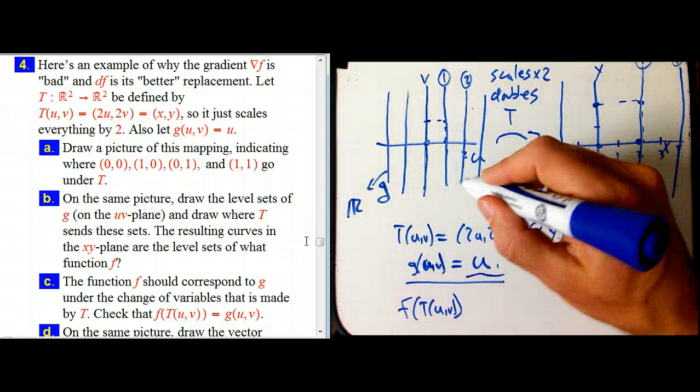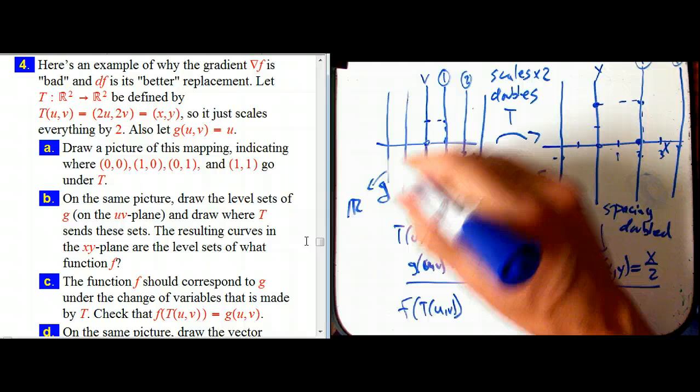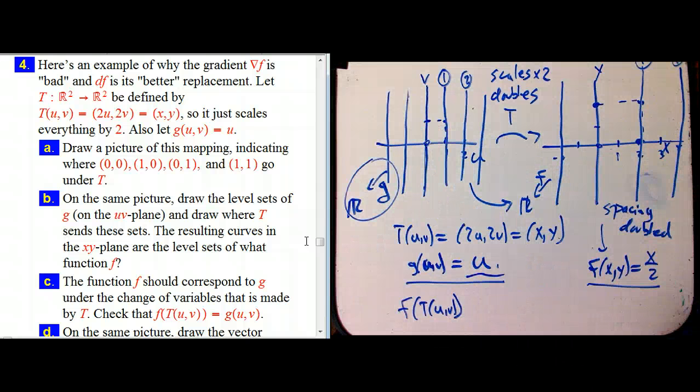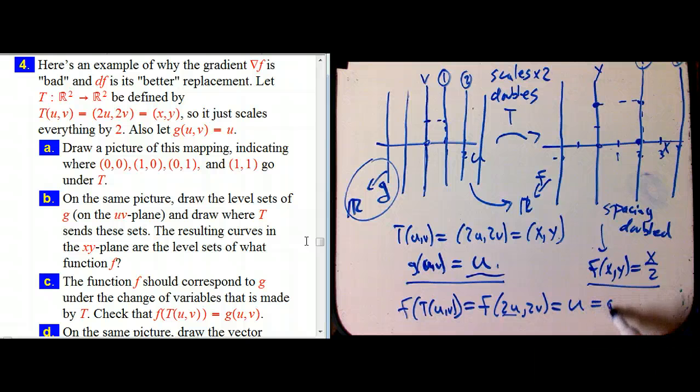Oh, that should be the same thing as g, hopefully, if these really correspond. And indeed, of course it does. F of two u, two v. Well, I take the x coordinate and divide it by two. Oh, yeah. That's u. And that's just g of u, v.